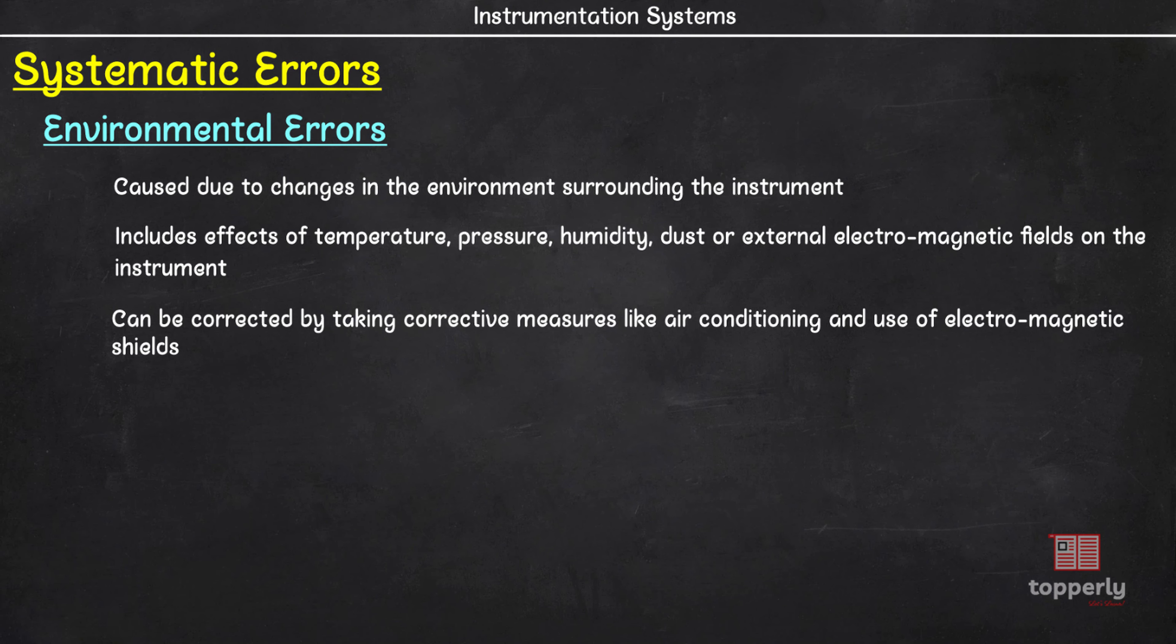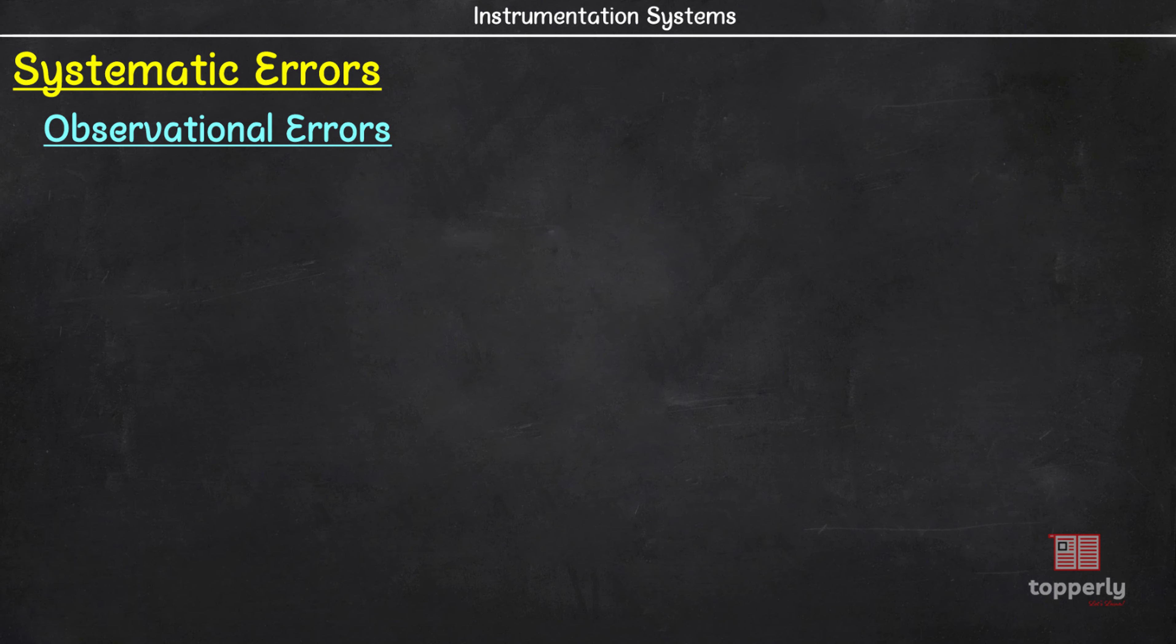Now the third category under systematic error is observational errors. There are many sources of observational errors. An example is parallax. Parallax is the error caused due to viewing angle. For instance, while taking the reading using the position of a pointer, if we view the reading from exactly above the pointer, we will get the correct value of reading, say 100 units. But if we view it from a different angle, say these angles, we may read the value as 101 or 99. So that is parallax error and is an example of observational errors.